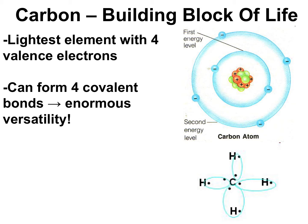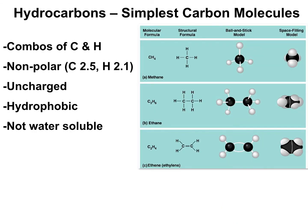To understand just how versatile having four valence electrons makes carbon, I want to consider the most simple carbon-containing compounds: hydrocarbons. Just like the name is trying to tell you, hydrocarbons are made of two simple ingredients — carbon and hydrogen. The electronegativity of carbon is 2.5 and the electronegativity of hydrogen is 2.1, making the electronegativity difference only 0.4 between them. This makes the bonds between carbon and hydrogen non-polar covalent bonds, and overall hydrocarbons are non-polar molecules — meaning that hydrocarbons are uncharged, hydrophobic, and water insoluble.